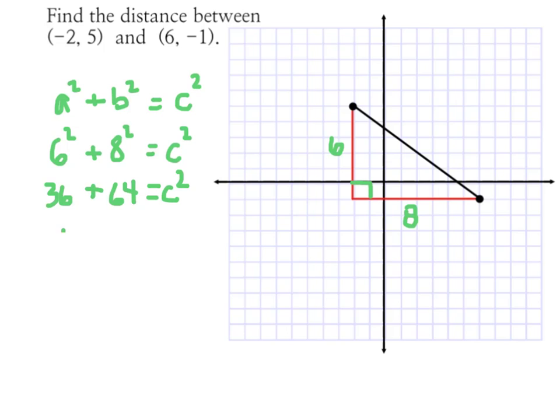Now 36 + 64 is 100, and that turns out pretty nice since 100 is a perfect square, meaning when I take the square root of it, I'm going to get a whole number. And the square root of 100 is 10. That means my hypotenuse is going to be 10 units long.